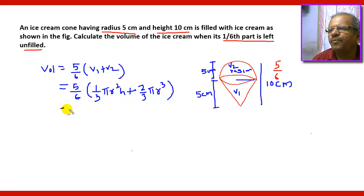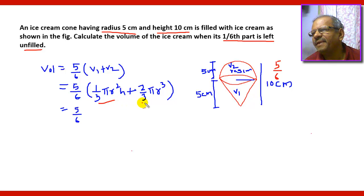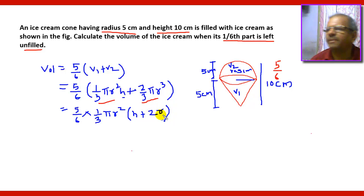Bracket which is equal to five sixth. Here one third pi r square will be a common factor, so taking it out as a common factor you will get one third pi r square, so inside the bracket it will be just h plus two r, close the bracket.